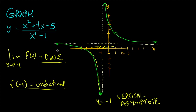Keep in mind: 'undefined' and 'does not exist' are different. Undefined refers to function values — what happens when x equals −1 there's no value. When talking about a limit, the limit is either a number or it isn't; if it's not a number, we say the limit does not exist. Vertical asymptotes are a very good indication that the limit will not exist.